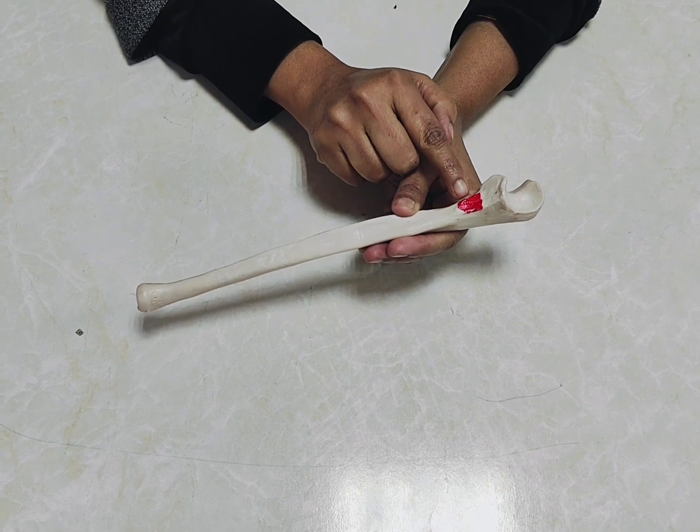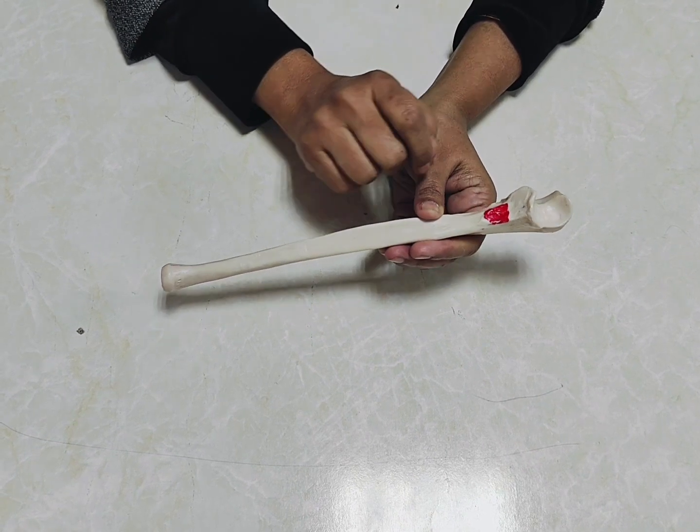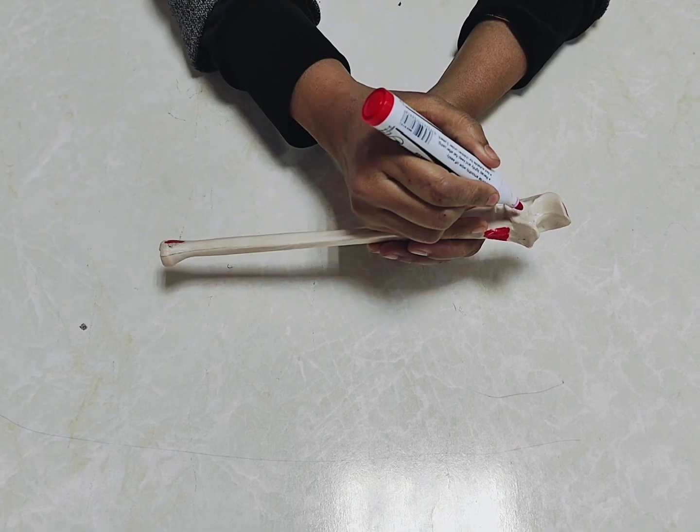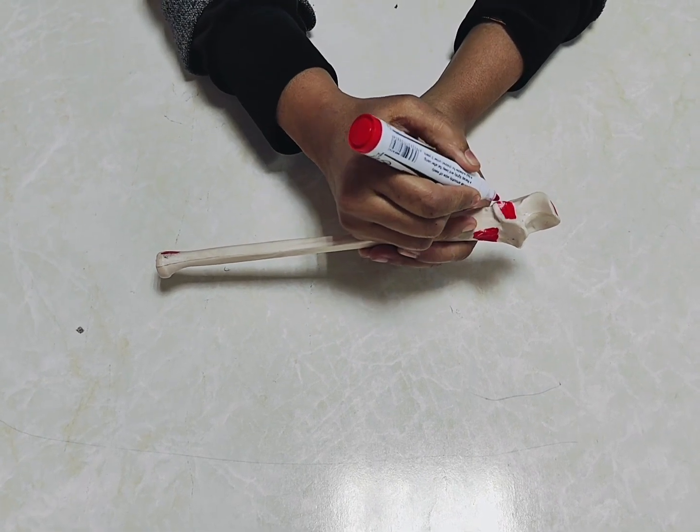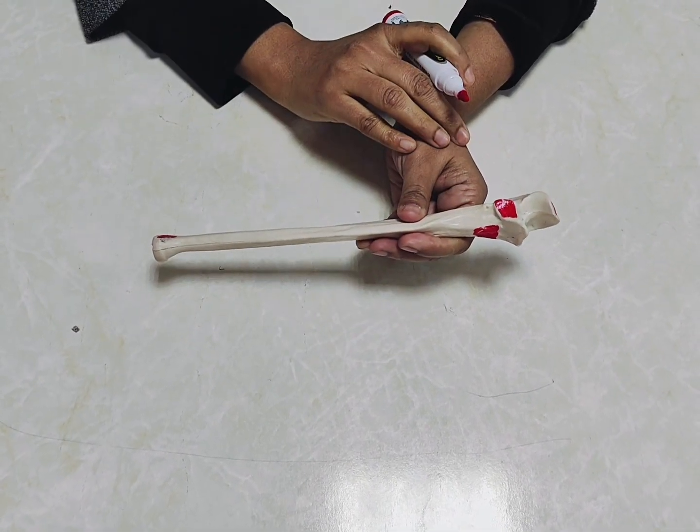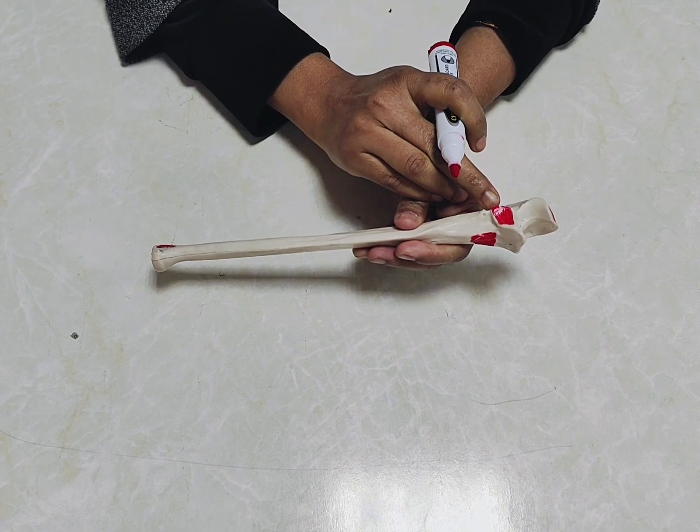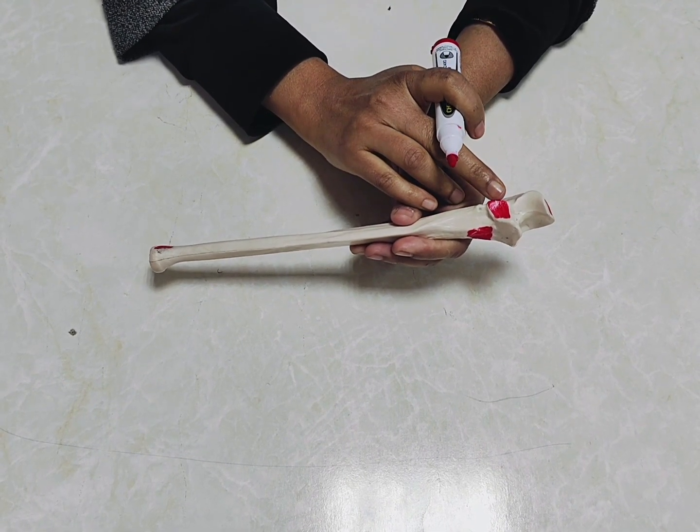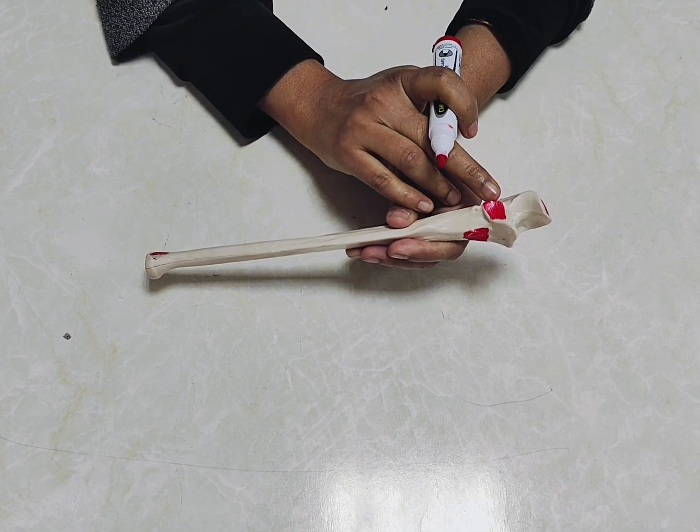Sometimes we may mark here and ask you what is the name of this area. You have to say this is the radial notch of ulna. What part of the radius will be attached here? Head of the radius will be attached. What is the name of the joint? The joint will be superior radioulnar joint.